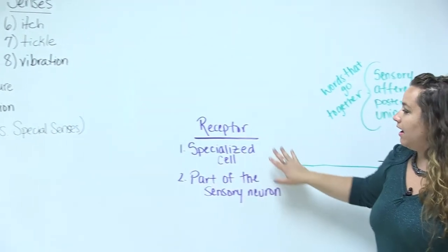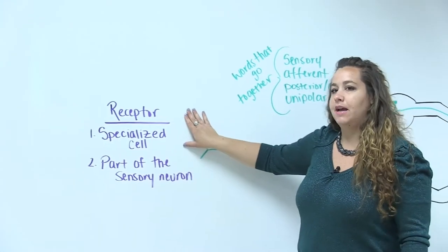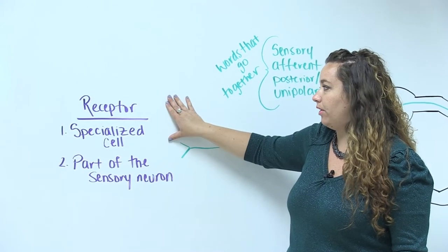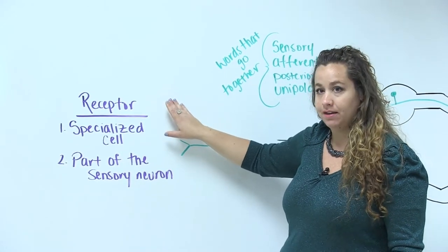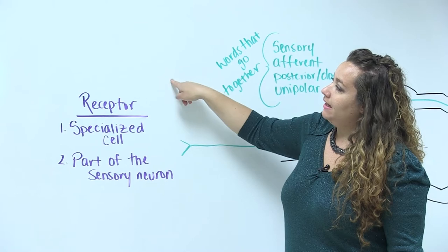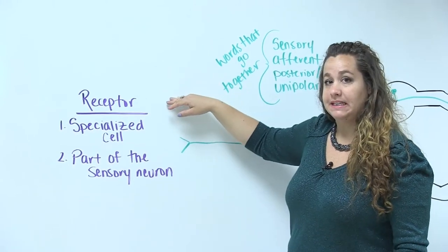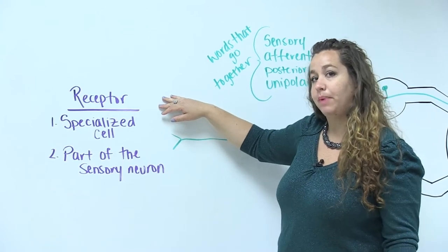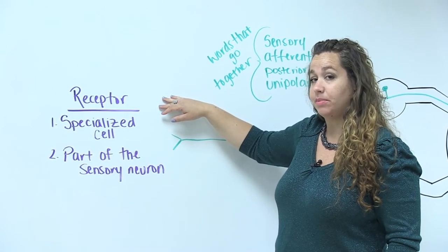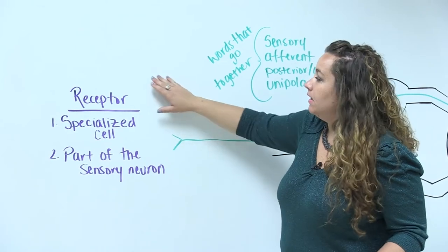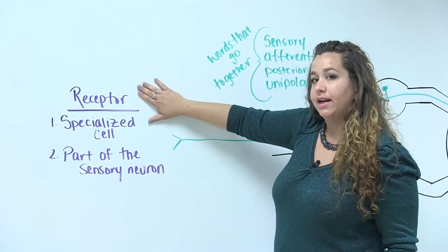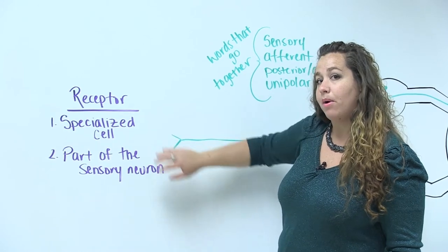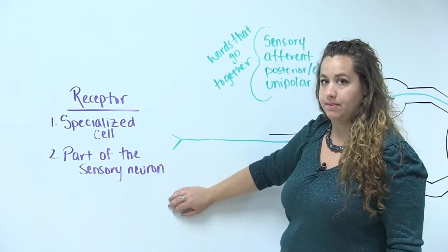In talking about general senses, the first step of sensation is activating a receptor. Each receptor is for a specific modality. Modality refers to each of the general senses we previously listed. So you have a receptor for temperature, a receptor for pain, which is different than the receptors for proprioception, etc. These receptors come in two varieties: they are either specialized cells on their own, or they are part of the sensory neuron.